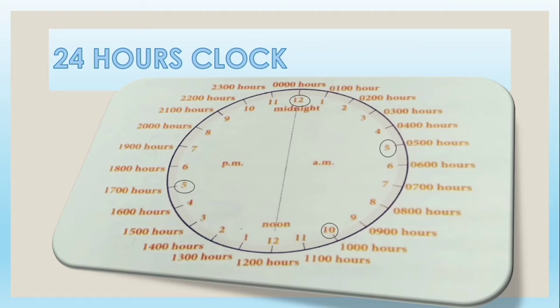12 plus 5 is equal to 17. So we have to add 12 because PM shows the time is after 12 noon. The 24 hour clock time does not use AM and PM.